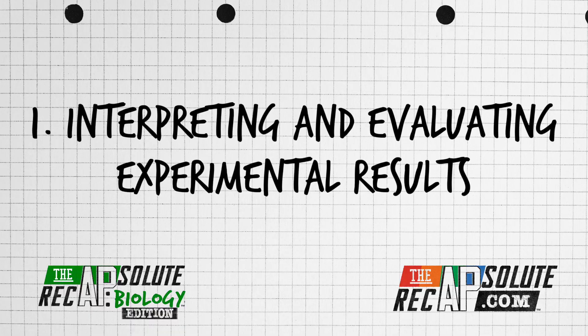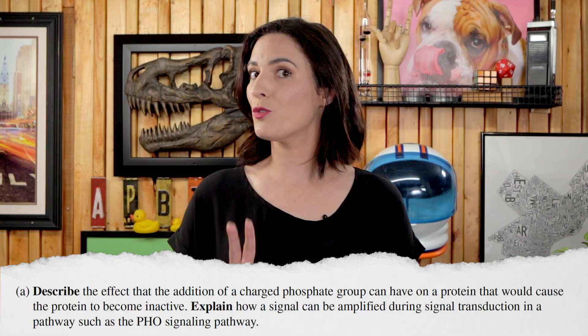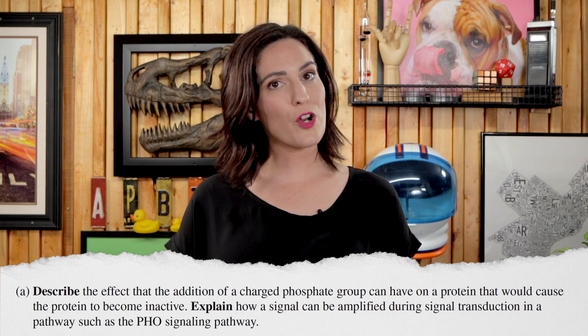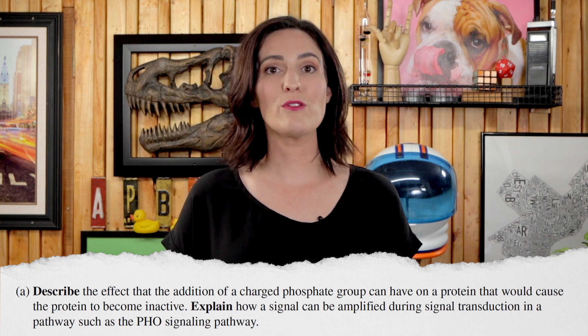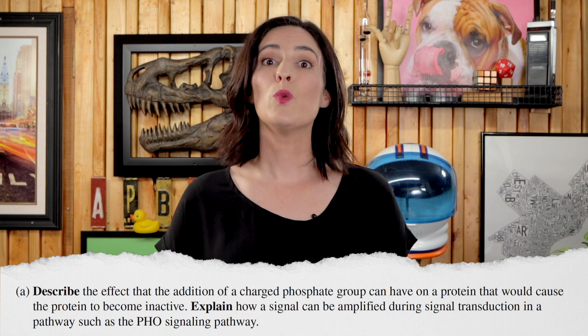Question 1 is interpreting and evaluating experimental results. The prompt previewed a signal transduction pathway and then studied the role of proteins in that pathway. Part A has two points. First, a charged phosphate group causes a conformational shape change in the protein, which would cause the protein to become inactive. A signal can be amplified during signal transduction because multiple proteins can be phosphorylated, which activates multiple intermediates and target molecules in a cascade.